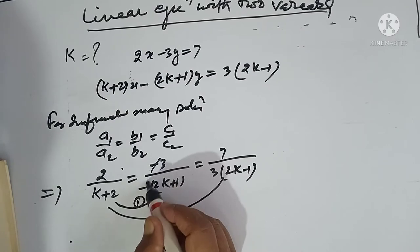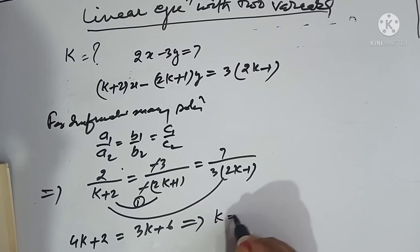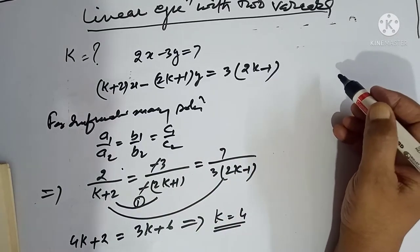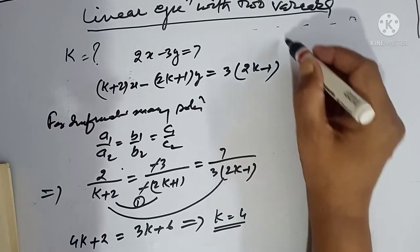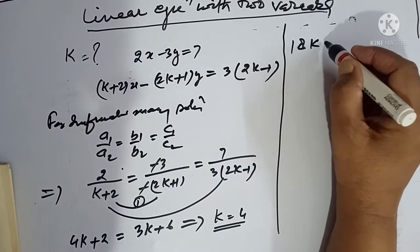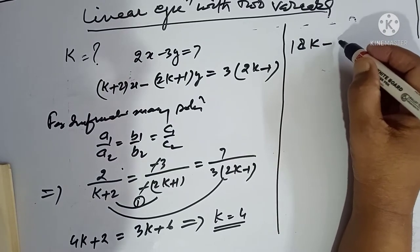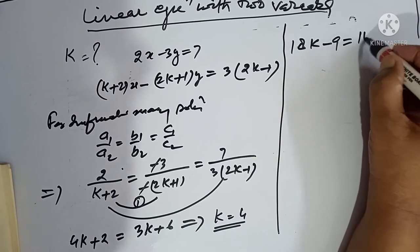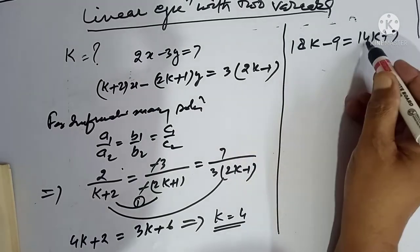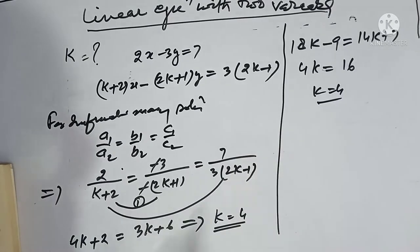From the first pair: 4k plus 2 is equal to 3k plus 6, which implies k equals 4. From the second pair: minus 9 equals 14k, giving 4k equals 16, so k equals 4 again. Both equations give the same value, so the only solution is k equals 4.